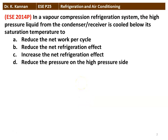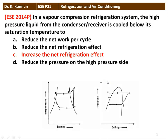The first question from the 2014 question paper: in a vapor compression refrigeration system, the high pressure liquid from the condenser or receiver is cooled below its saturation temperature. There are four options: to reduce the net work per cycle, to reduce the net refrigeration effect, increase the net refrigeration effect, or reduce the pressure on the high pressure side. The correct option is: increase the net refrigeration effect.